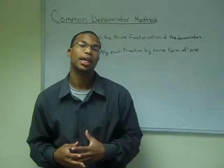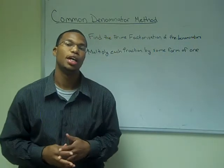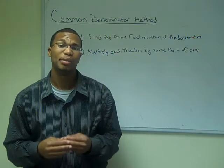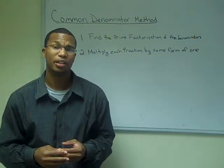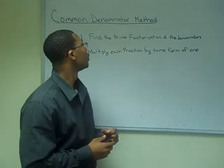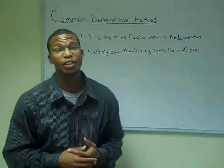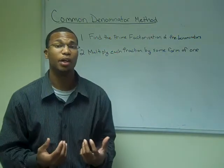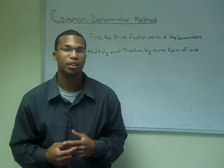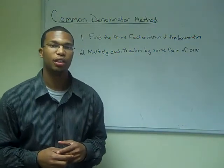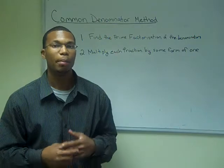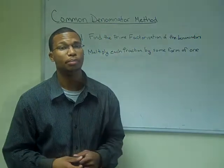The last method I am going to show you is the common denominator method. The common denominator method involves two steps. First, we are going to find a prime factorization of the denominators. And after we find a prime factorization of the denominators, then we will multiply each fraction by some form of one.